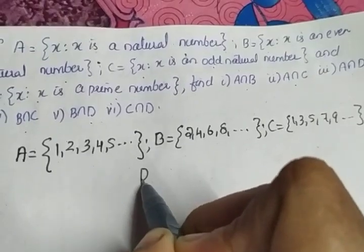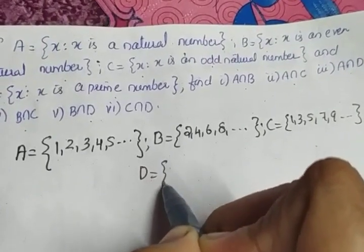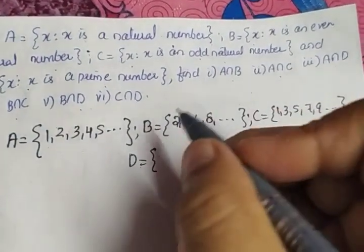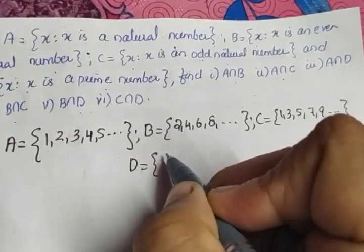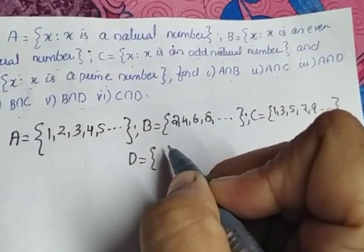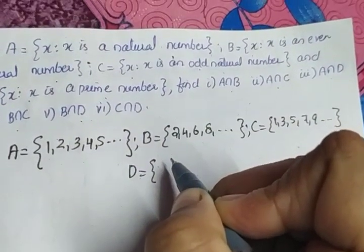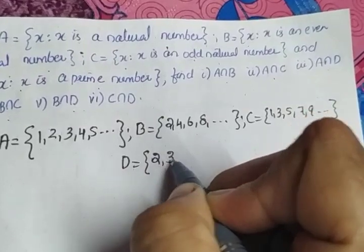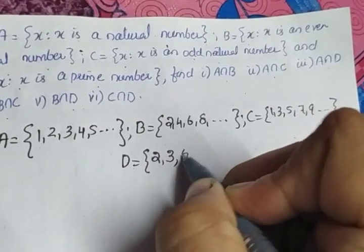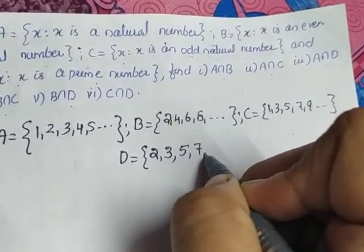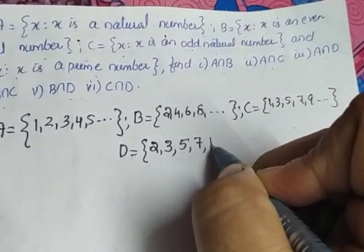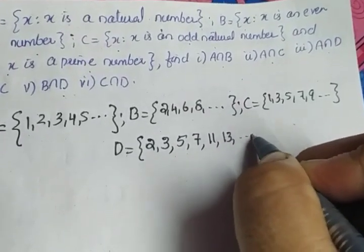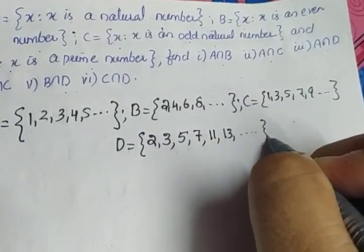Set D: X is a prime number. Note that 1 is not a prime number. The only even prime number and the smallest prime number is 2. So D = {2, 3, 5, 7, 11, 13, ...}.